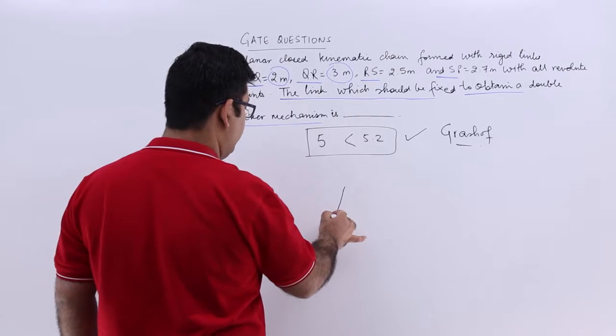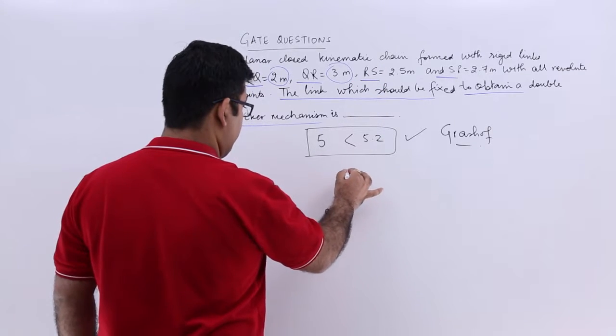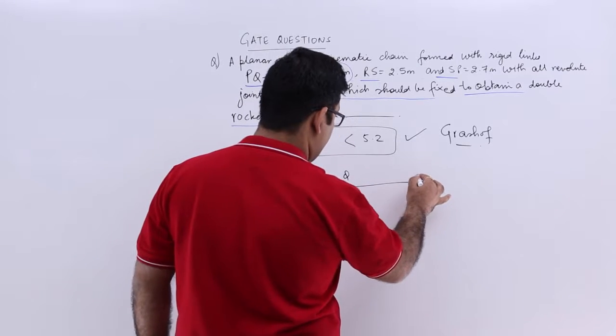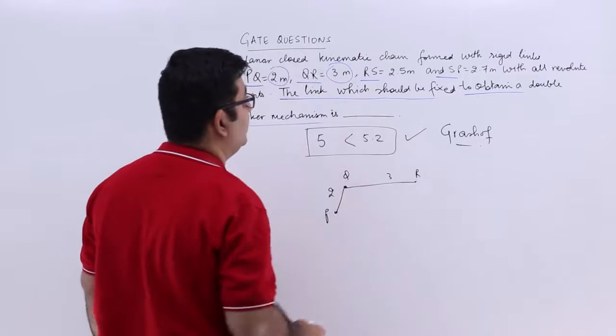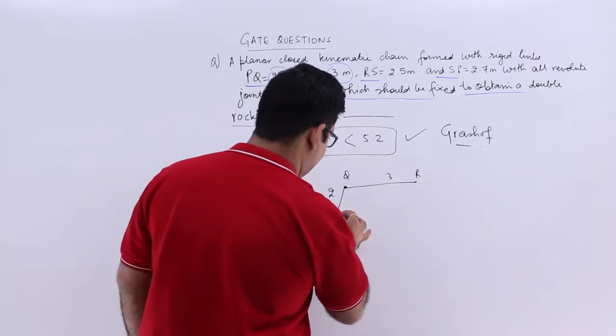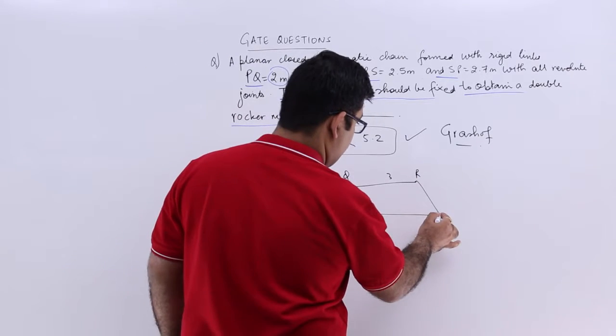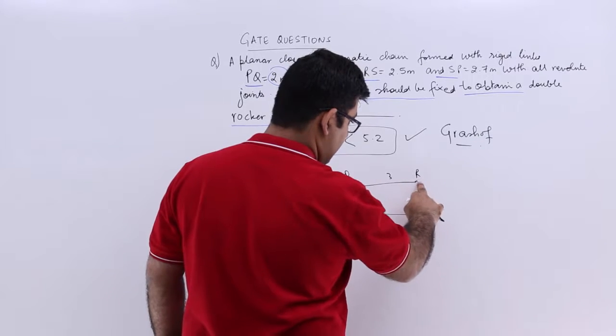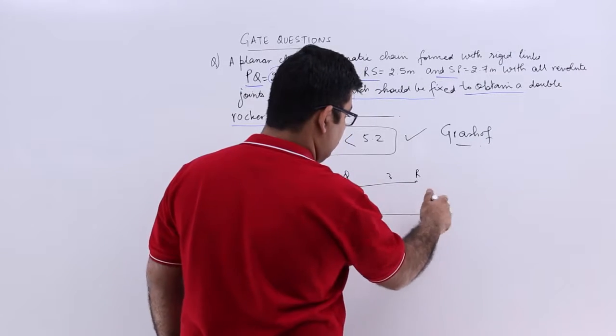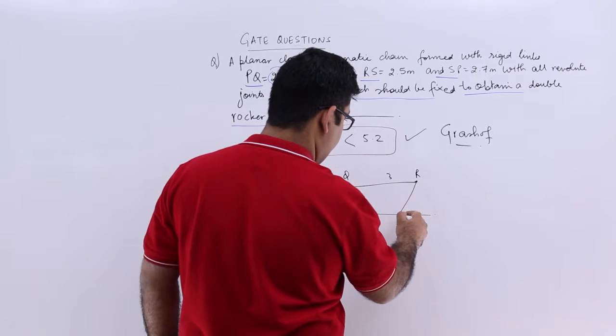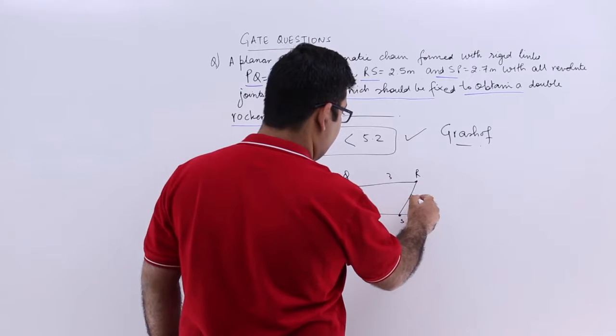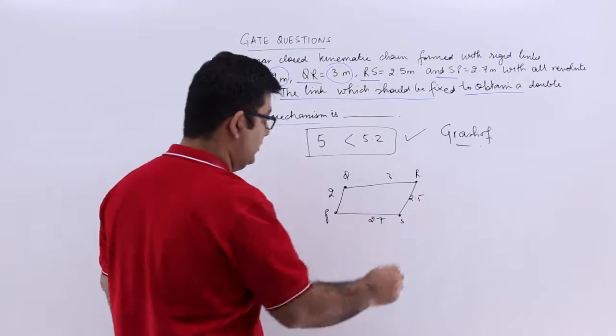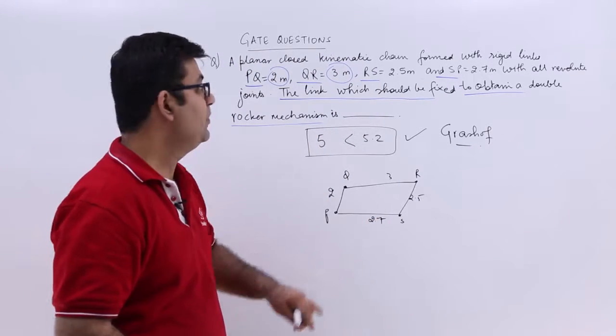You have PQ, which is 2. Then QR, which is 3. Then RS. Let me just change the configuration. This is 2.5 and then PS is 2.7. This is the only way you can connect them.